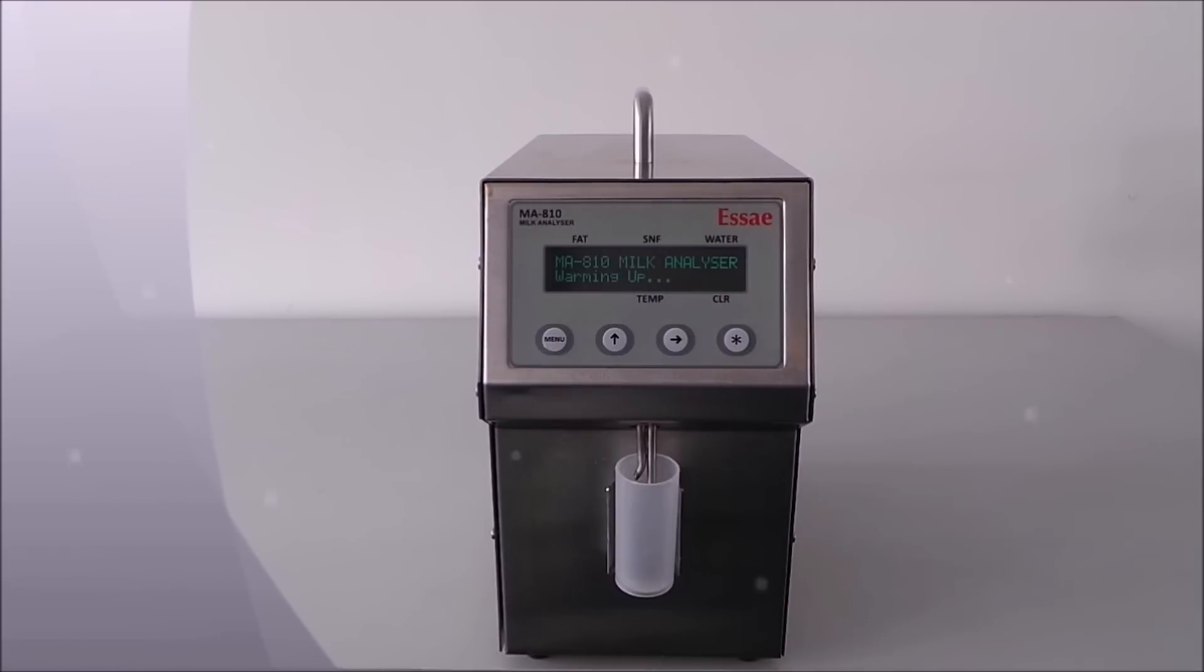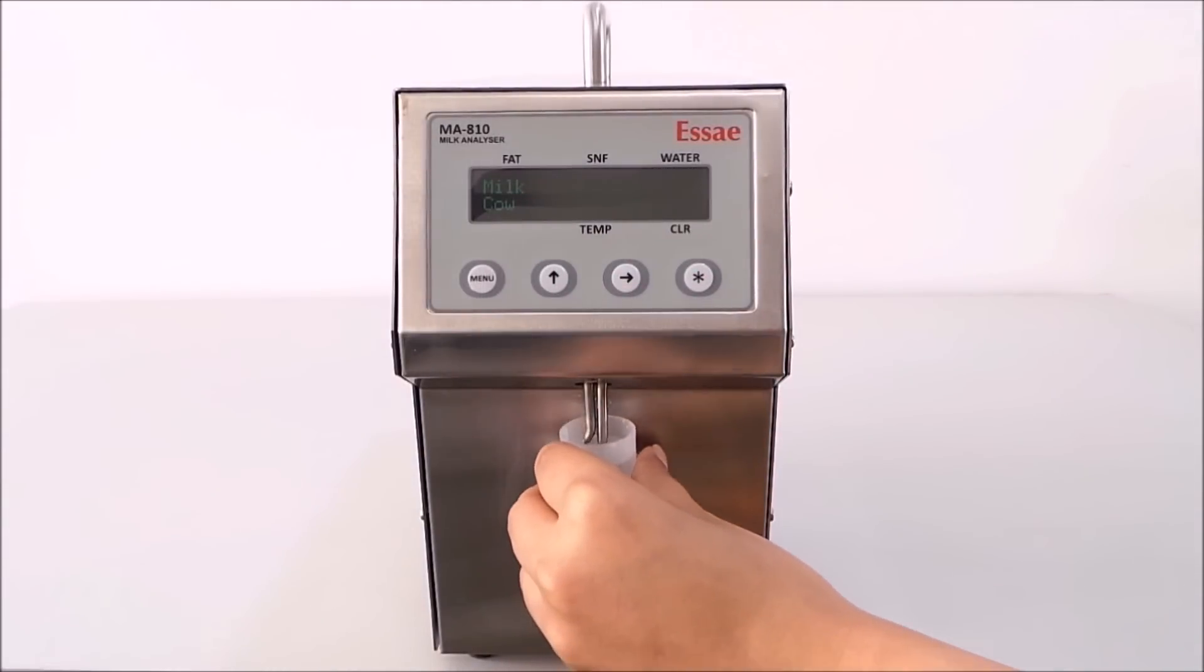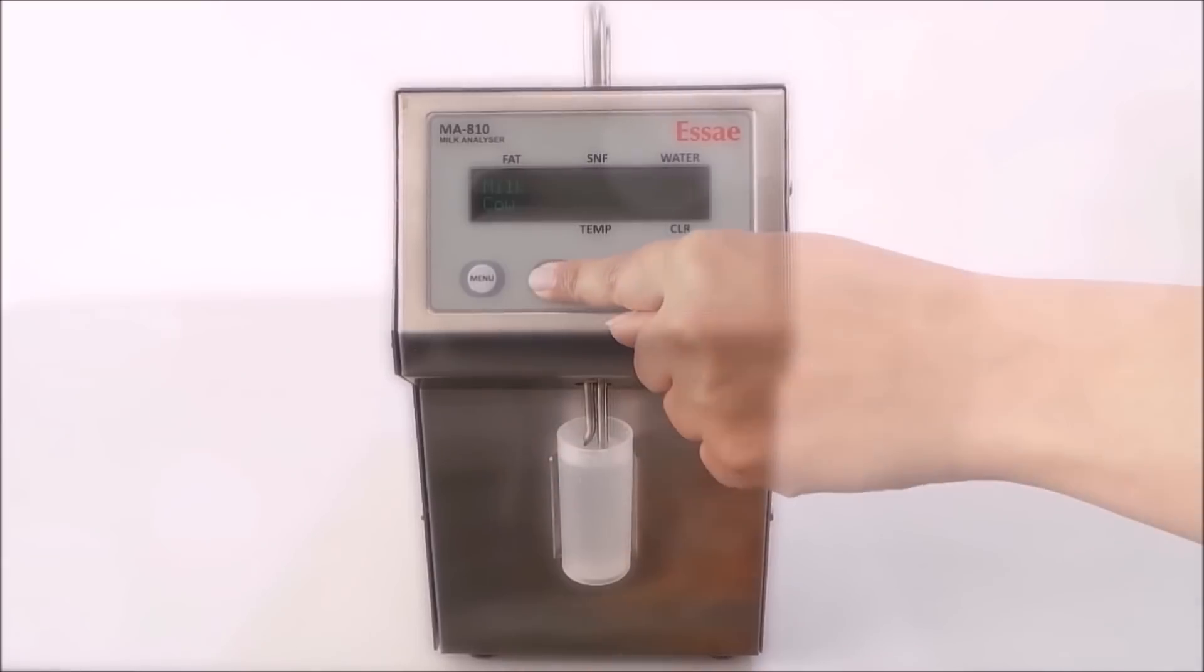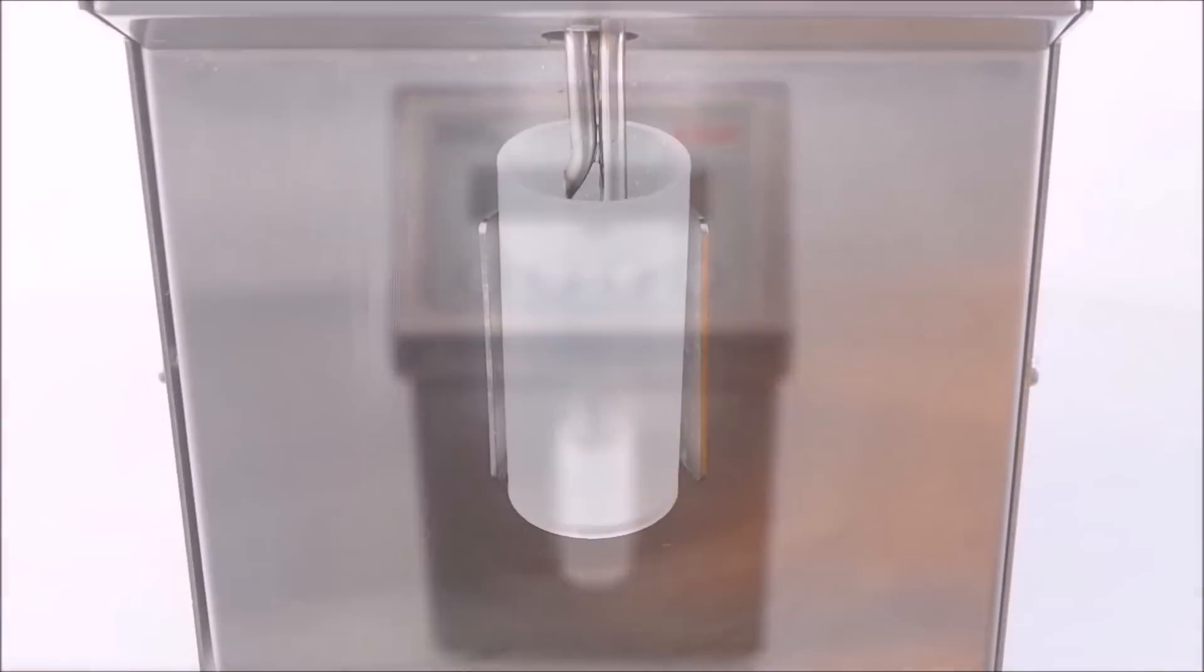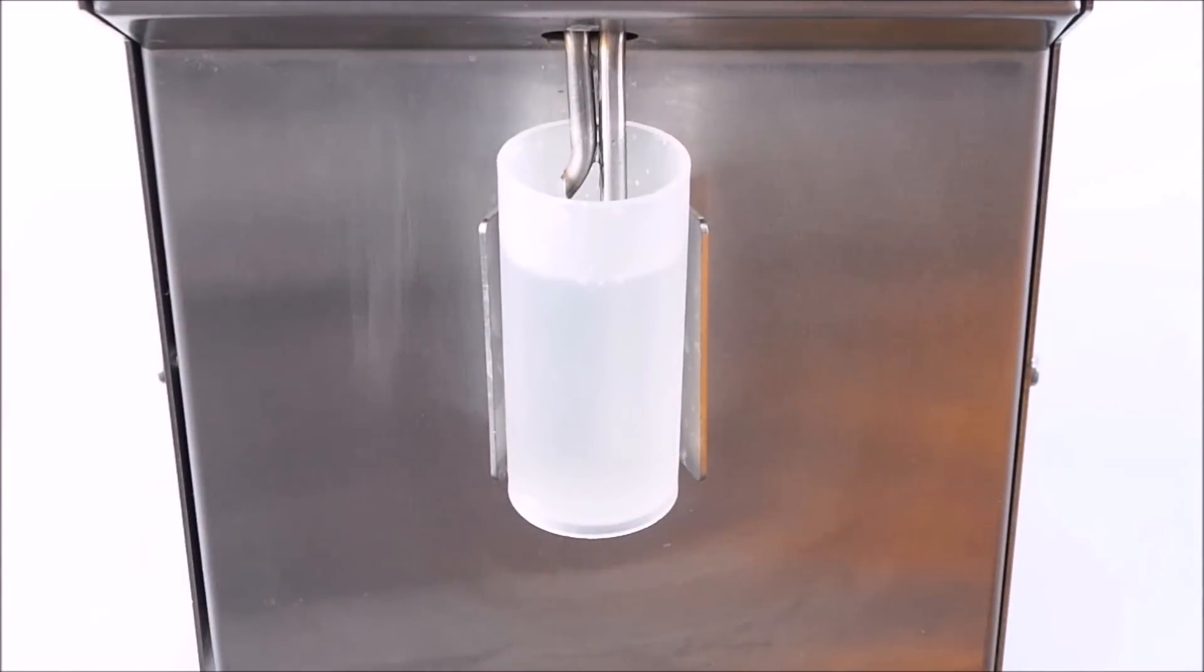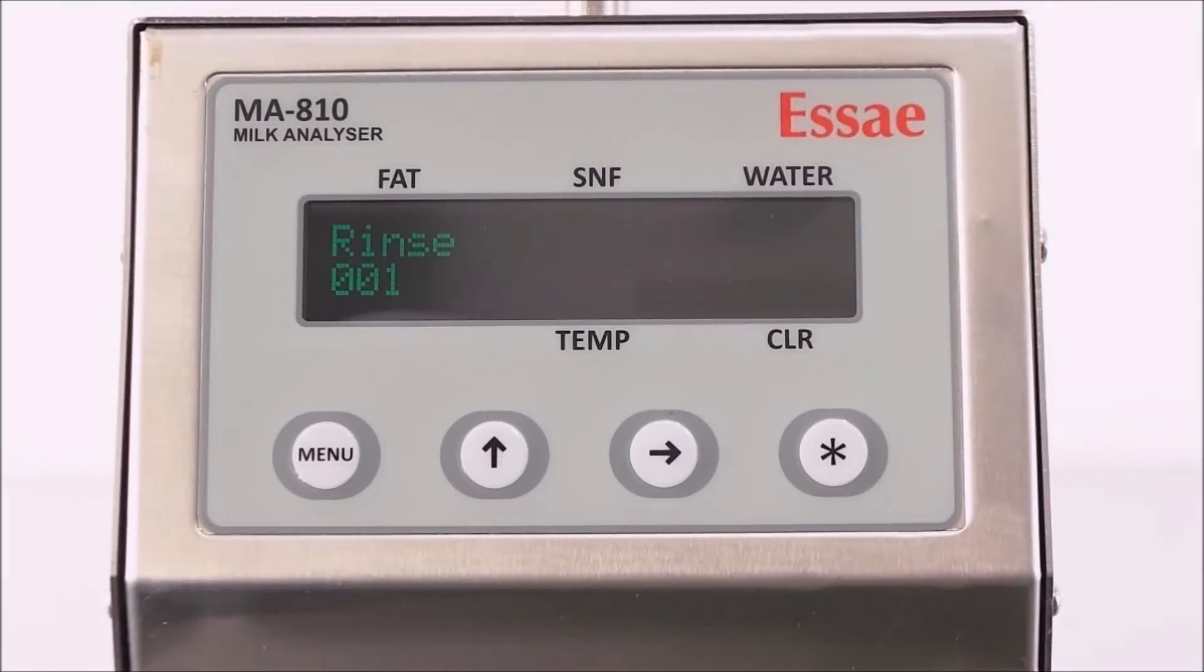To clean the machine after analysis, place the container filled with clean water and press the up arrow. The inlet pipe will take the water in and release the water after cleaning. Please note that the machine should be rinsed with clean water after every shift. Daily and weekly cleaning should be done as per the instruction in the manual with recommended solution. The same process will continue for 5 times and the countdown will be displayed on the screen.